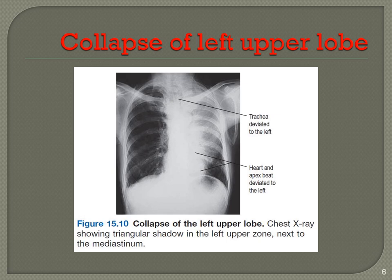Here you can see a collapse of the left upper lobe on this x-ray. The trachea has been shifted towards the left side. Comparing both lung fields, the lung area is clearly seen on one side. There is collapse of the left lobe with translucency on the left side, and the heart and upper mediastinum have been deviated towards the left side because of the collapse.